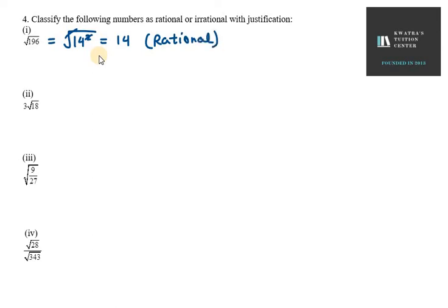Now the second part: 3√18. We can simplify √18. It can be written as 9 × 2. Now how can we write 9? We can write it as 3².